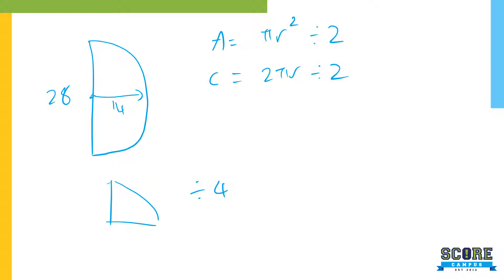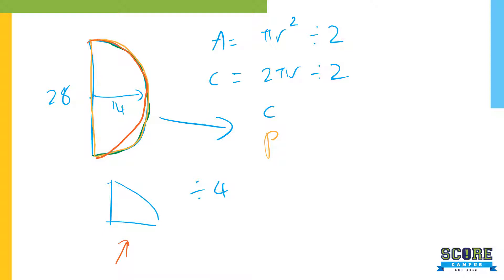If I ask you to find the circumference of a semi-circle, you find only the curvy part — that is the circumference. However, if I ask you to find the perimeter, you find the whole thing. Many students make this mistake — when asked for the perimeter they only find the circumference, and when asked for the circumference they only find the straight part. The circumference is only the curvy part; the perimeter is the whole outline.